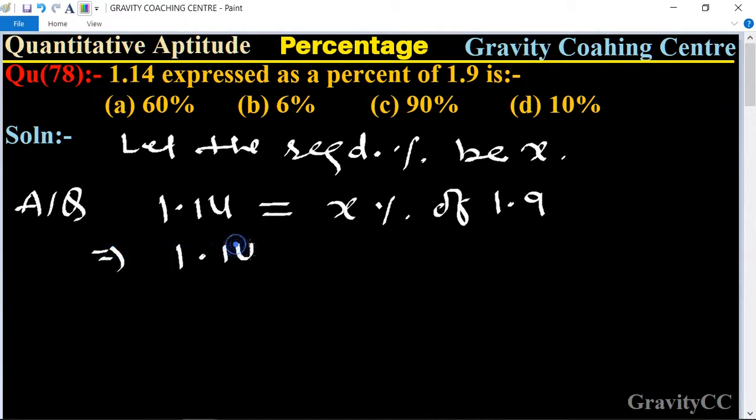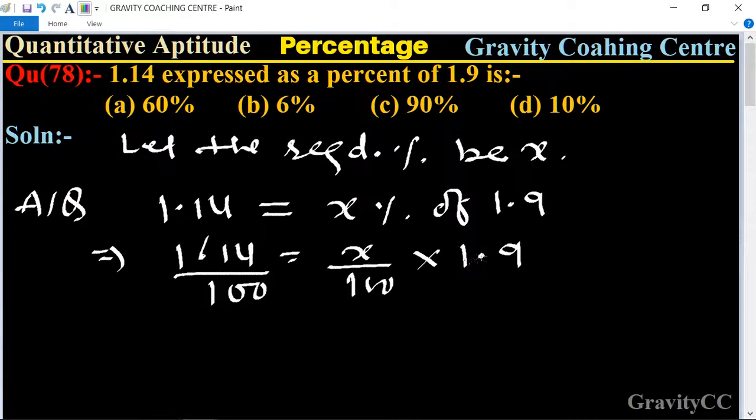1.14 equals x divided by 100 multiplied by 1.9. Cancel the decimal points, so this becomes 114 equals x divided by 100 multiplied by 19. The hundreds cancel, therefore x equals 114 times 10 divided by 19.